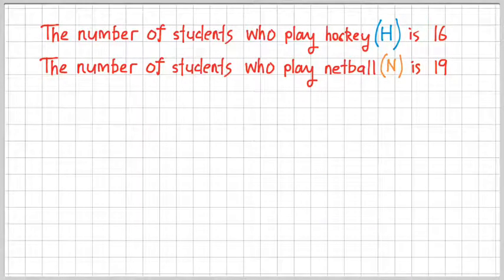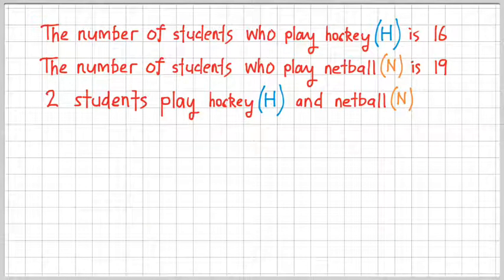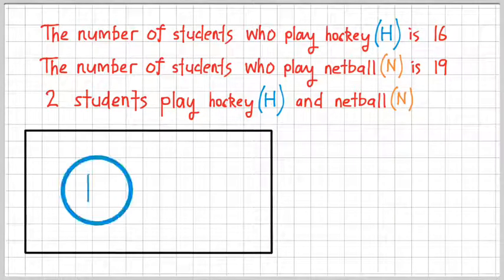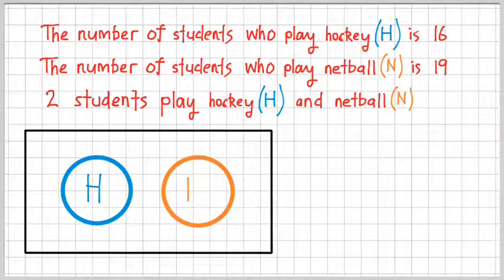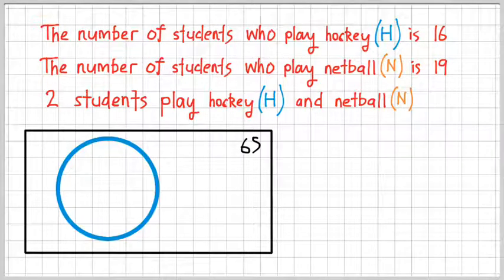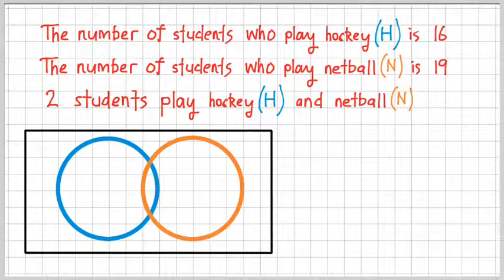Alright, so we're setting up our example again. And we're going to add in this complication here. Two students play hockey and netball. So let's draw this out. This is what we had before, hockey and netball. 16 and 19. Now, our Venn diagram is not going to look like that. There's a 65 there for you. It is going to look like this.